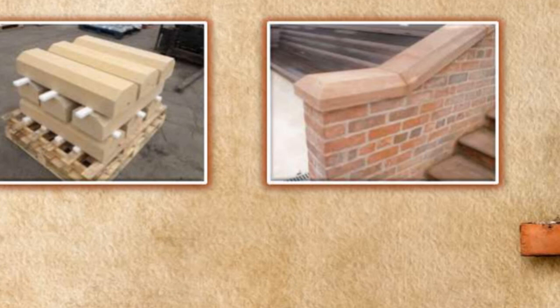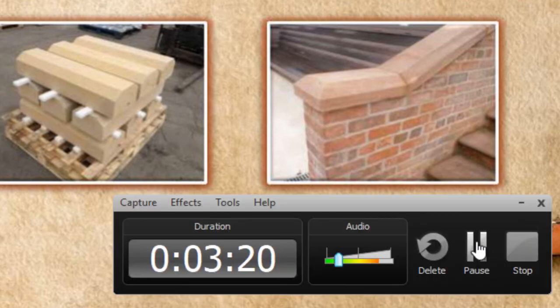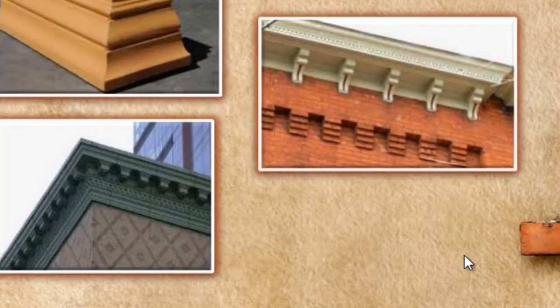Another type are the coping bricks — flush and overhanging special bricks used to cope the tops of free-standing walls and parapets. Finally, the cornice bricks: a cornice is a horizontal decorative molding which crowns the building and is outward projecting in most cases.